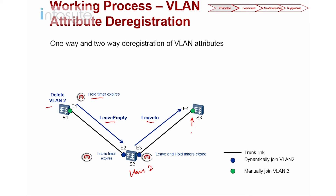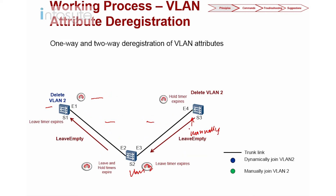Now what happens when we delete the VLAN? After deleting VLAN 2, a leave-empty message is sent after the hold timer expires. Switch 2 on Ethernet 3 sends a leave-in to Switch 3 (which already has VLAN 2), received by Ethernet 4. After S3 deletes VLAN 2, it sends a leave-empty back to Switch 2. This is how GVRP works using join-in, join-empty, leave-in, and leave-empty messages.